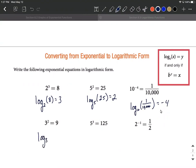We'll wrap these up pretty quickly. Log base three of nine is going to equal two. Log base five of 125 is going to equal three.